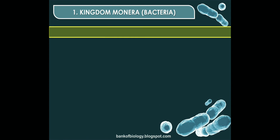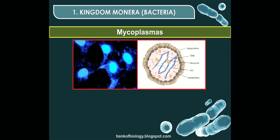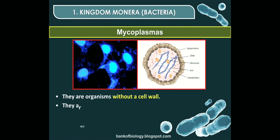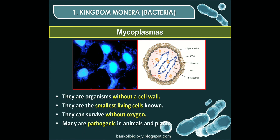Mycoplasma is a type of bacteria without a cell wall. They are the smallest living cells known and can survive without oxygen. Many mycoplasmas are pathogenic in animals and plants.